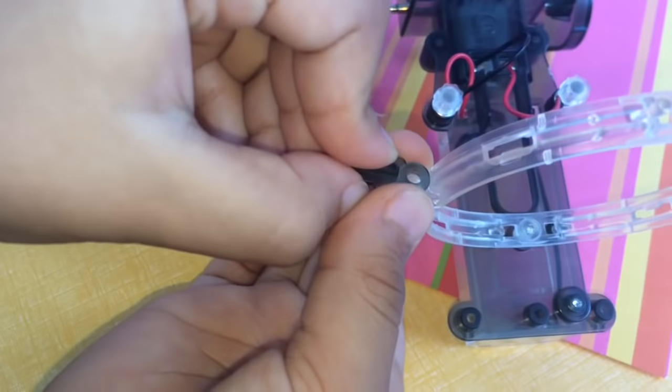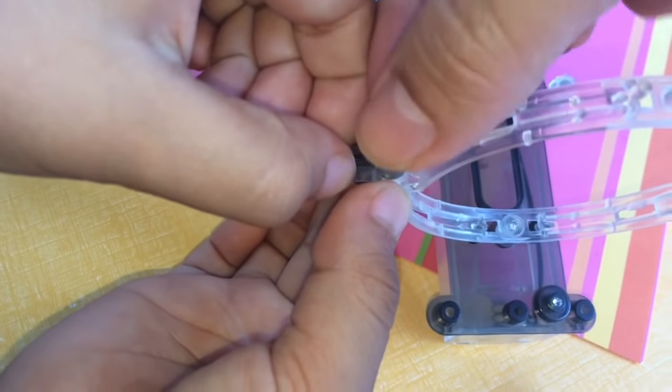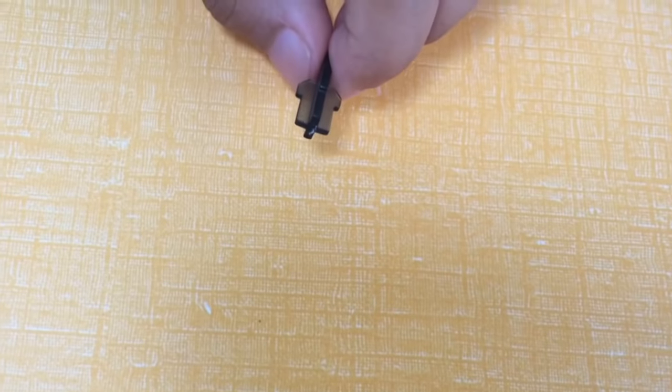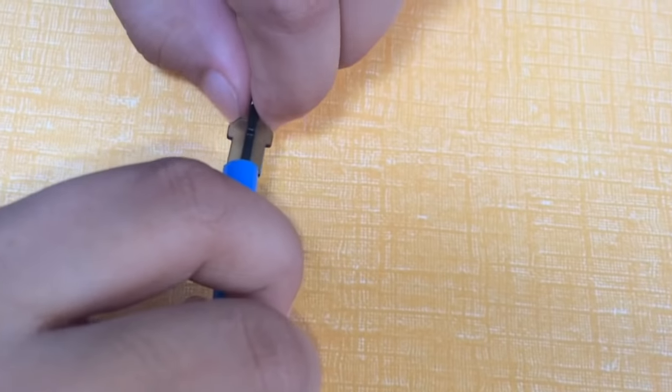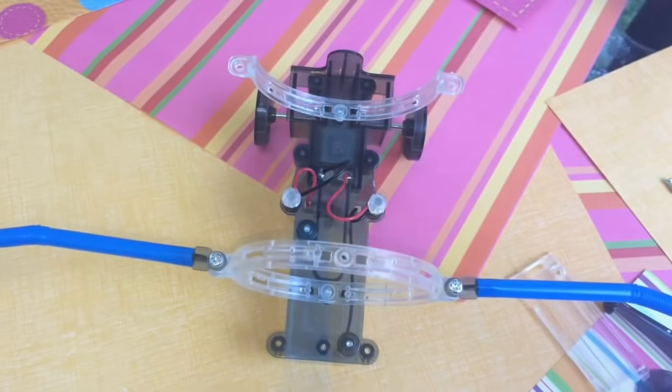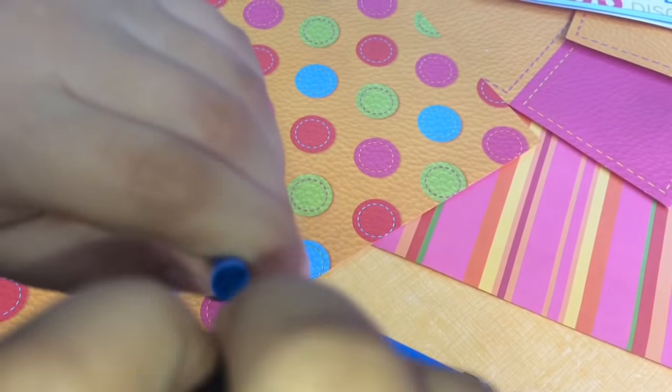Take a straw attachment and a bendy straw and put them together. Put a gripper hand on each straw.